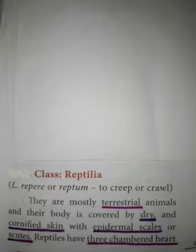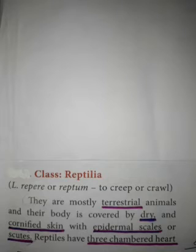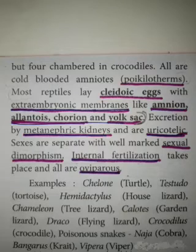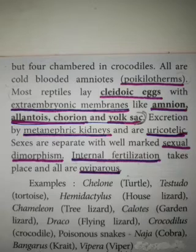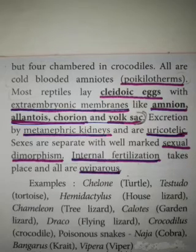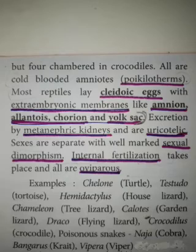They have a three-chambered heart. However, crocodiles have a four-chambered heart. So in the class Reptilia, all organisms have a three-chambered heart except crocodiles, which have four chambers. If you are asked in one word: the reptile which has a four-chambered heart — the answer is crocodile.